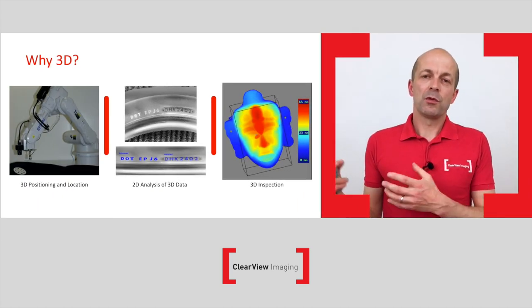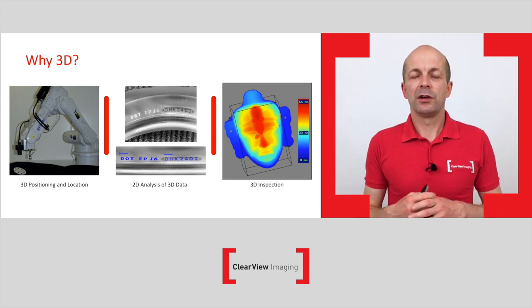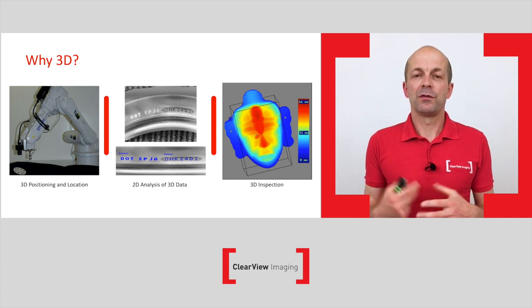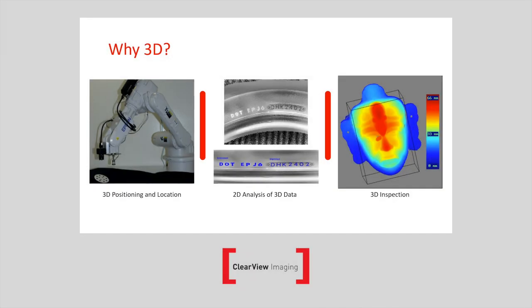If we go with three more examples: the one on the left is a very classical 3D vision application — robot bin picking, pick and place. In this case, you've got the robot with a 3D camera and a 3D vision system sitting alongside it, and you'd be looking at random bin picking: picking a part and placing it into another location.